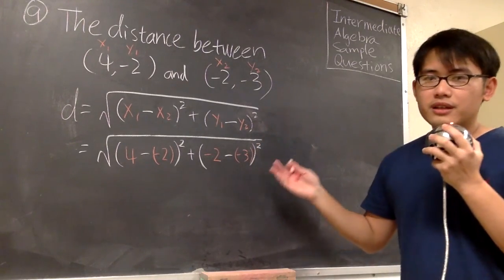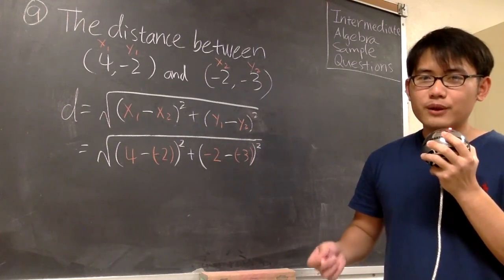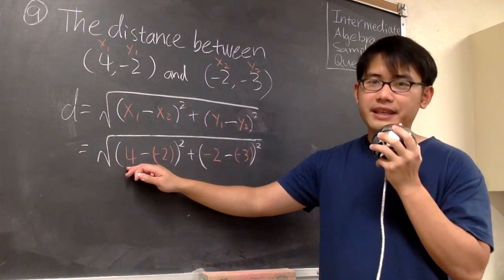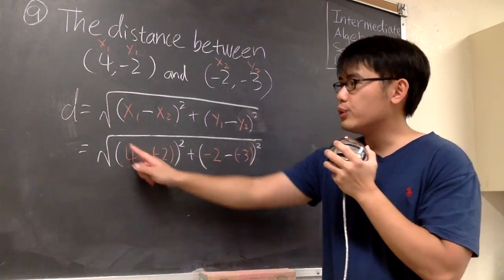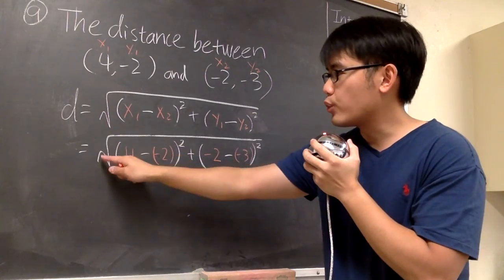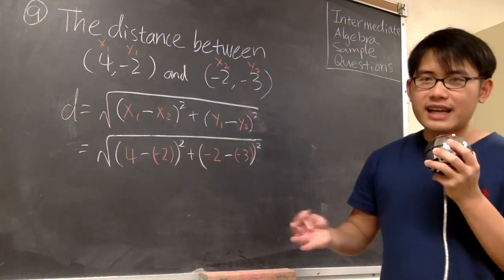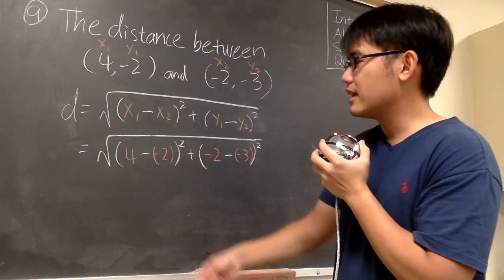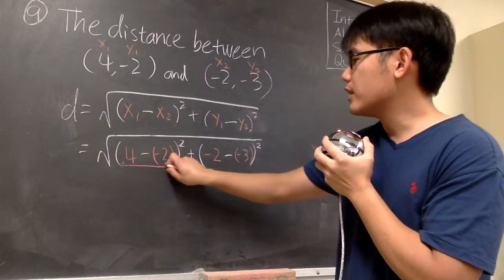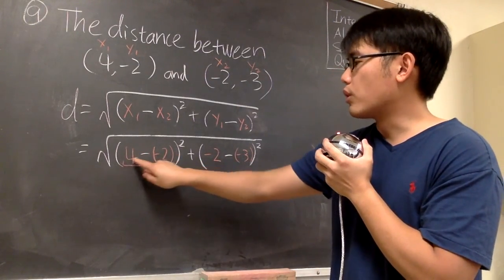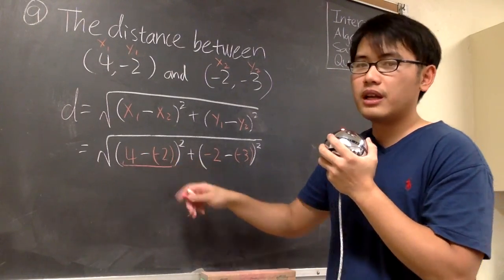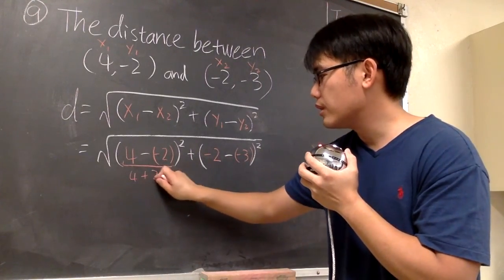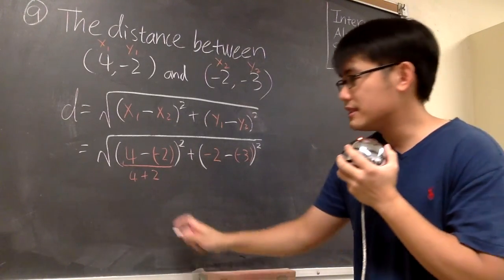So this right here is the setup. Now we just have to follow the order of operations, working from the inside out. Make sure that you do not cancel the square root and the squares — that's not correct. We focus on the inside: we are talking about 4 minus negative 2, which is the same as 4 plus 2, and we know that's going to be 6.